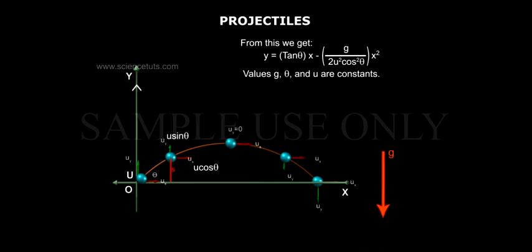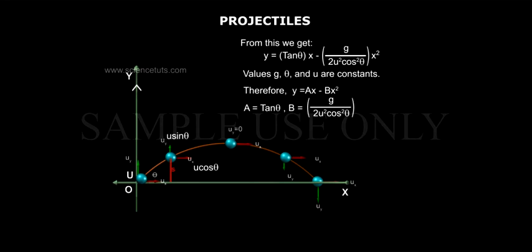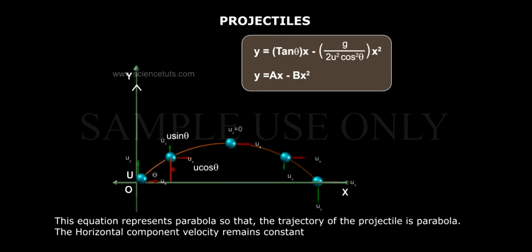Since g, θ, and U are constants, the equation becomes y = Ax − Bx², where A = tanθ and B = g / (2U² cos²θ). This equation represents a parabola, so the trajectory of the projectile is a parabola.